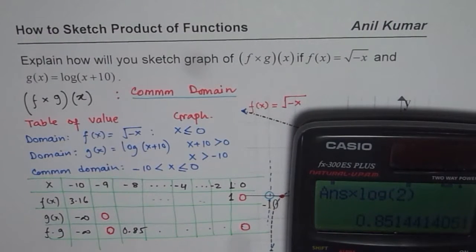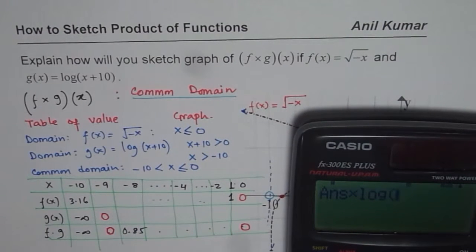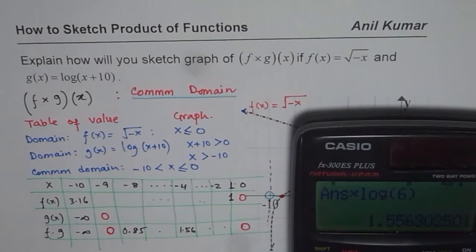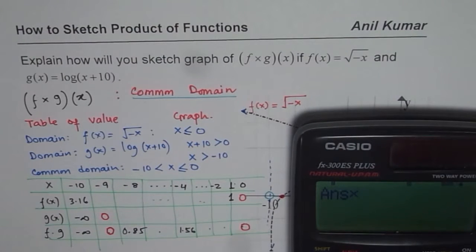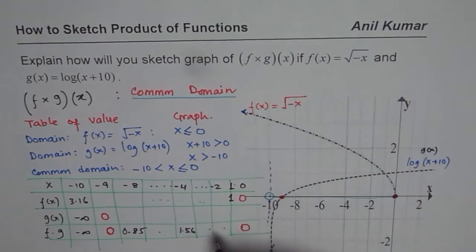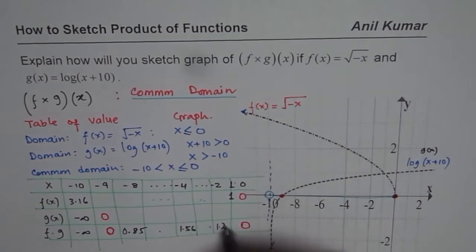For x equals minus 4: f of x is square root of 4 equals 2, and g of x is log of 10 minus 4, which is log of 6. Multiplying gives us approximately 1.56. For x equals minus 2: f of x is square root of 2, and g of x is log of 8. Multiplying gives us approximately 1.277.